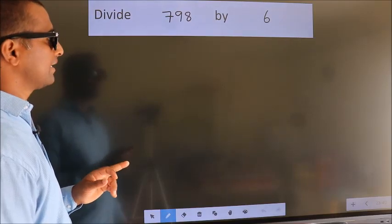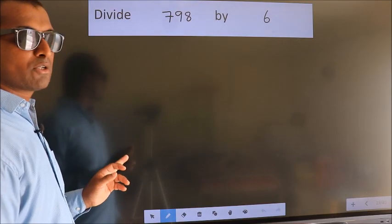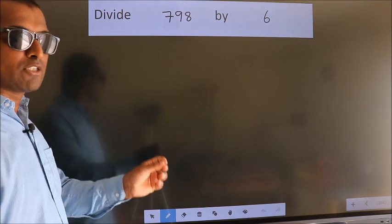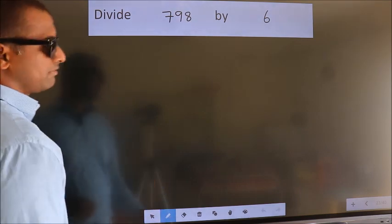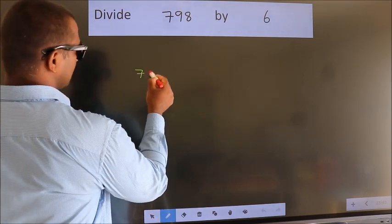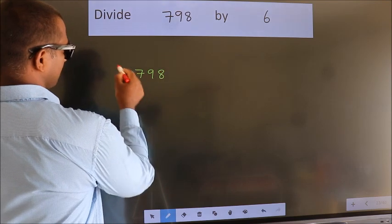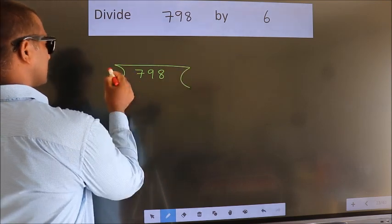Divide 798 by 6. To do this division, we should frame it in this way. 798 here, 6 here.